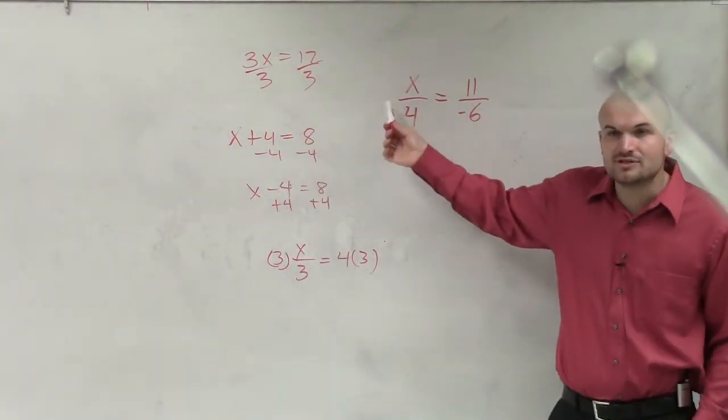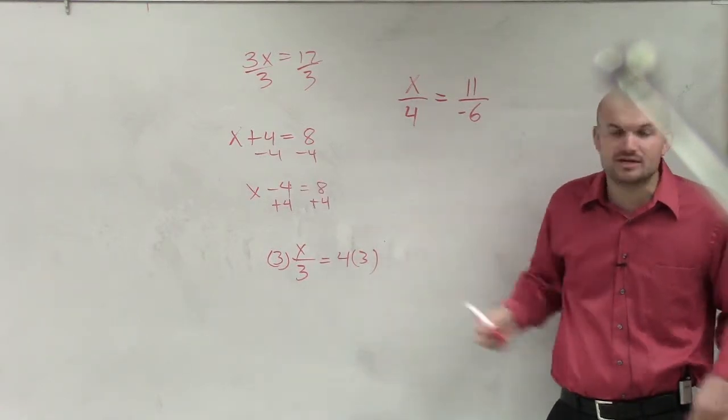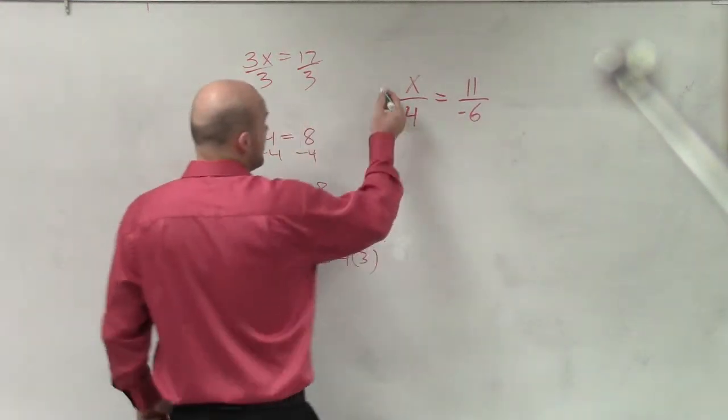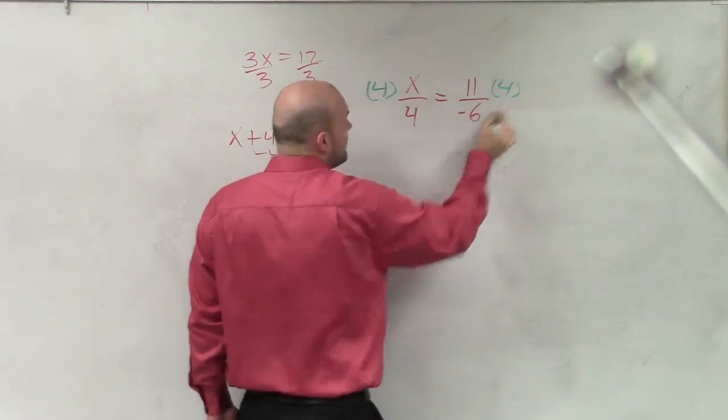So let's look at this. What is happening to this variable? It's being divided by 4, right? So what inverse operation would you have to do? Multiply it by 4, OK? So to solve this, guys, that's all we have to do. Multiply it by 4.